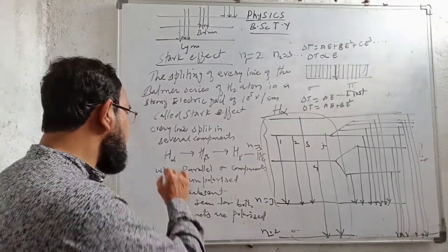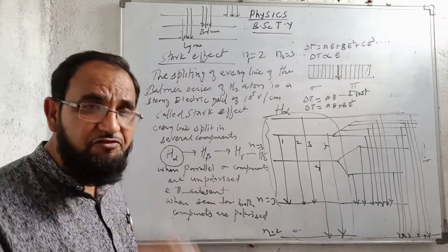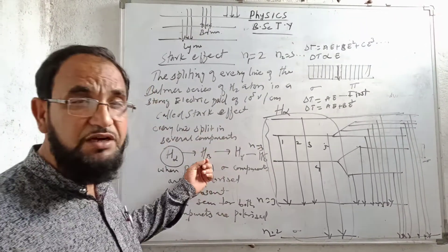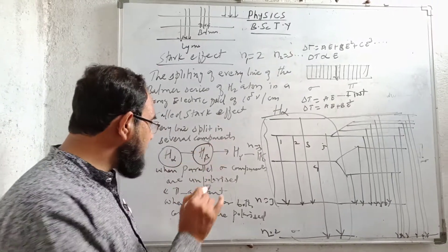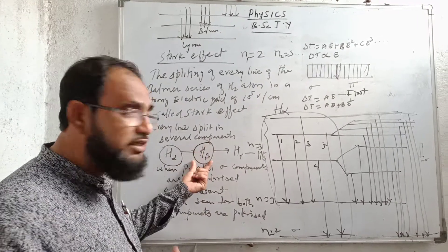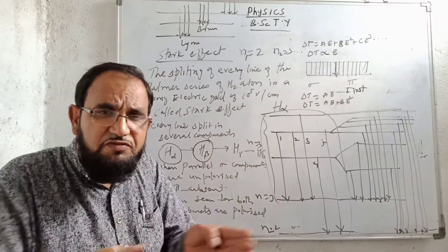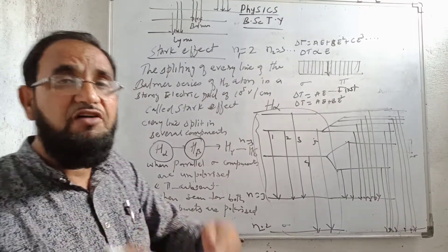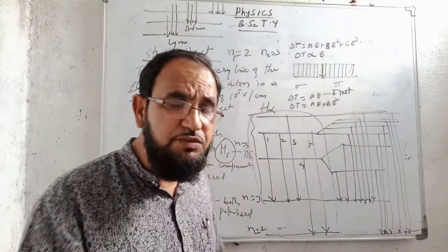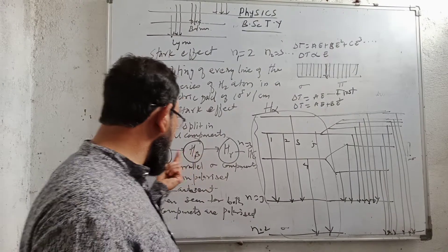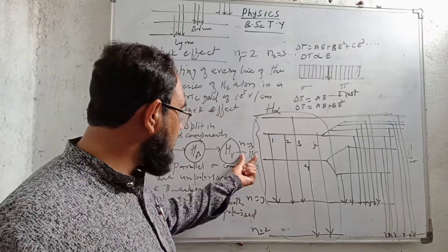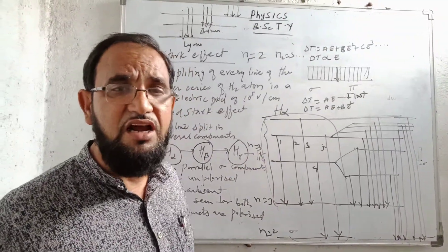The number of splitting lines in H-alpha is less than in H-beta, meaning H-beta has a larger number of lines after application of the electric field. H-gamma has more splitting lines than H-beta and H-alpha, and H-delta has the highest number of lines. This is the Stark effect.